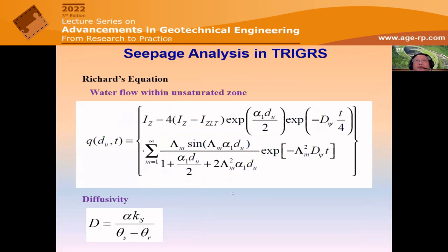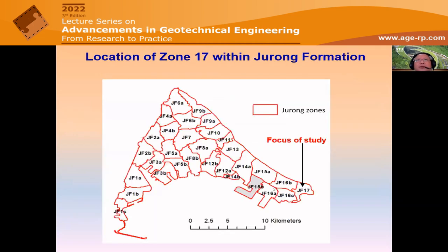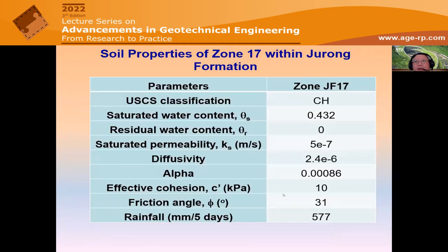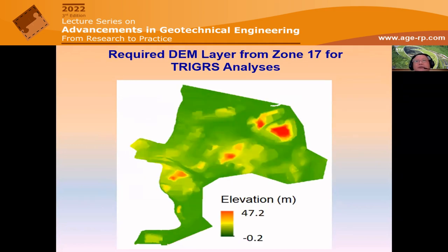To run the analysis, permeability and groundwater table are needed to run TRIGRS and obtain pore pressure distributions during rainfall. The SWCC needs to be reformatted in terms of Gardner's equation as that is the formula embedded in the program. For the limit equilibrium analysis using SCOOP3D, representative shear strength properties and pore pressures imported from the seepage analysis are used to obtain factor of safety distributions through each zone. For the Jurong Formation, Zone GF-17 is examined, showing slope angle and elevation distributions.